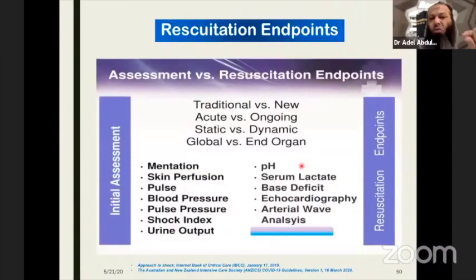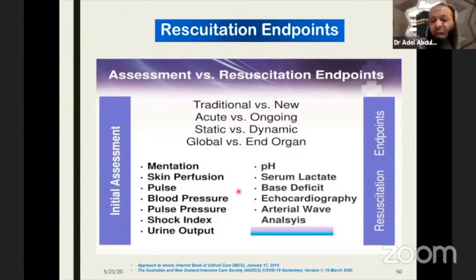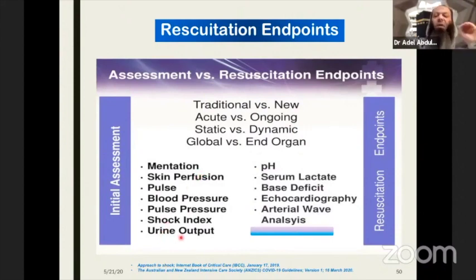To end my talk, two important slides on resuscitation endpoints. When to stop resuscitation is a dynamic process — easy to start, hard to know when to end. Use the whole package: global and end-organ assessment, dynamic and static parameters, mentation, skin perfusion, pulse pressure, heart rate trends, shock index, urine output, serum lactate, pH, base deficit, point-of-care ultrasound targets, and PPV waveform. Do not rely on only one tool — it is a global assessment.